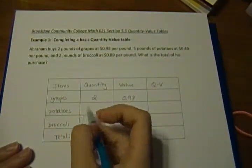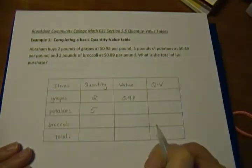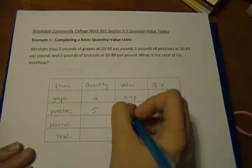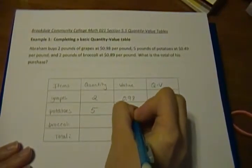Our potatoes, we have five pounds, so our quantity is five, and our value is the forty-nine cents or 0.49.